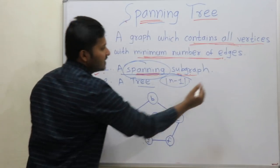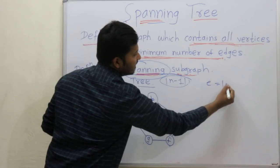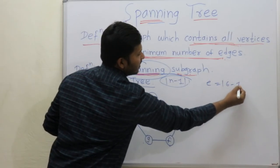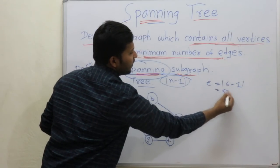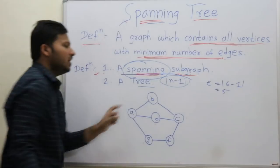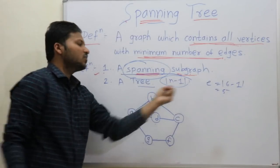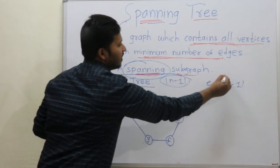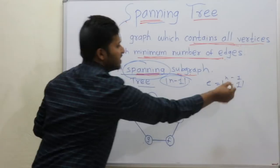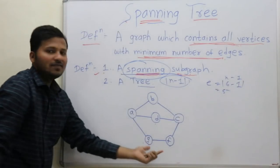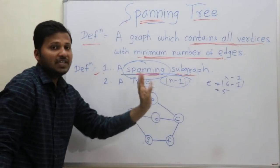So 6 vertices means the number of edges in the spanning tree will be 6 minus 1, that is 5. Because that is n minus 1 — n minus 1 is 6 minus 1 in this case, giving 5 edges.